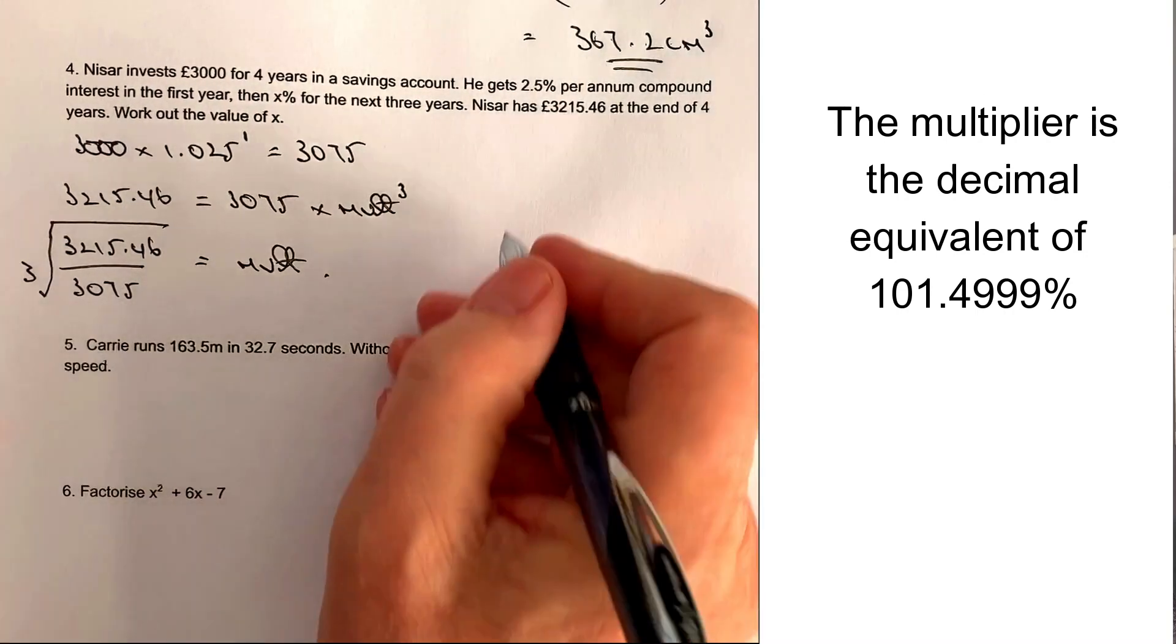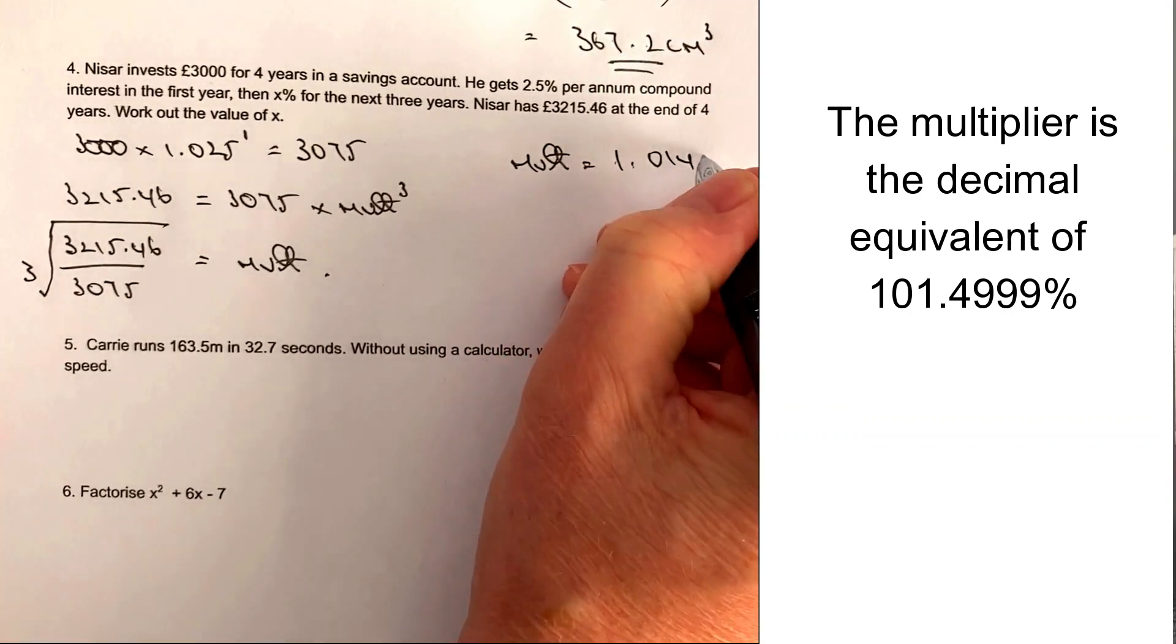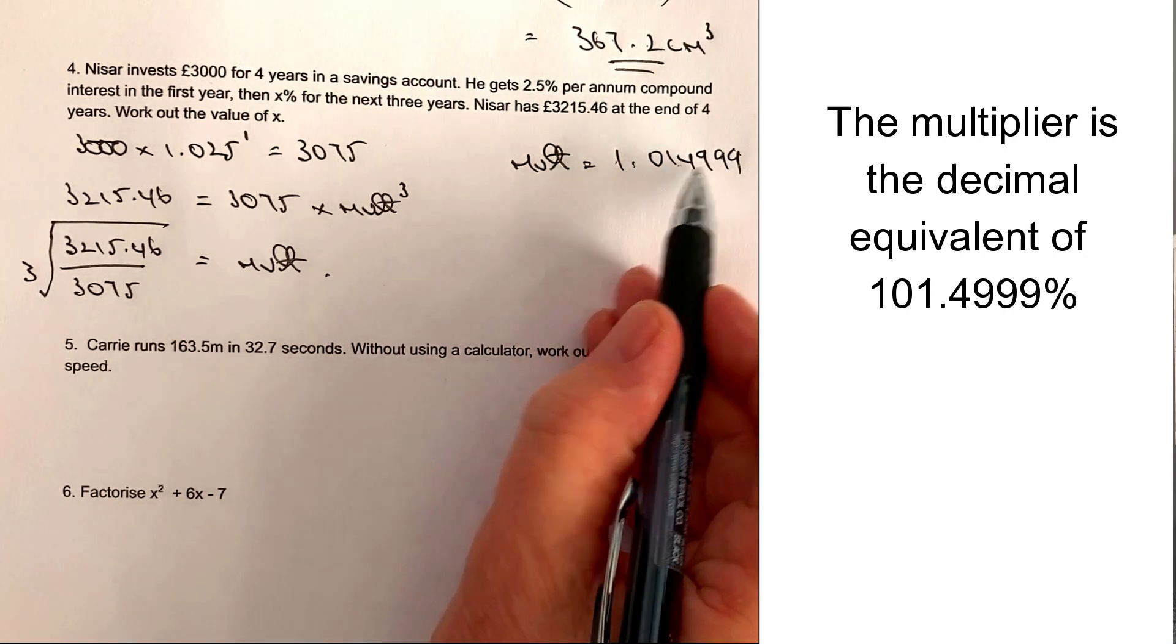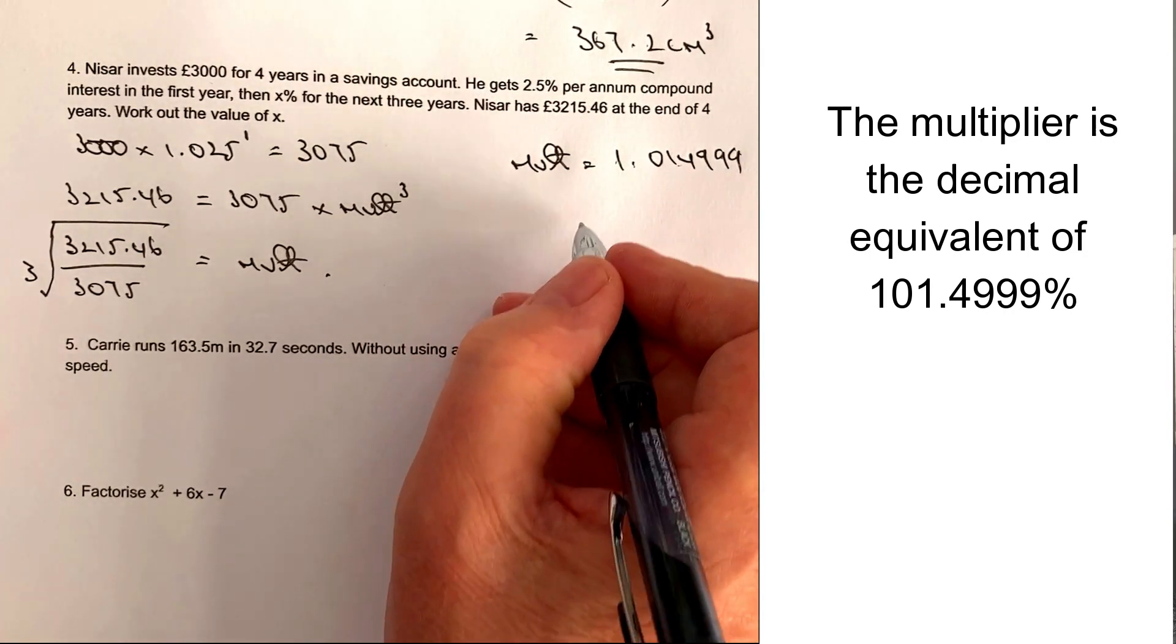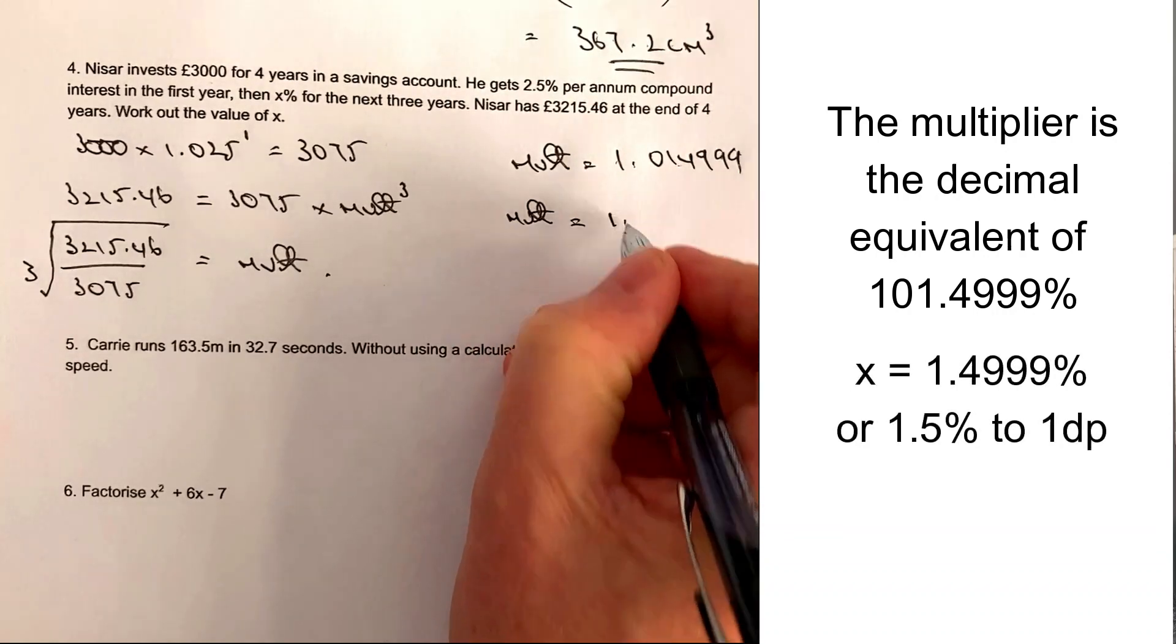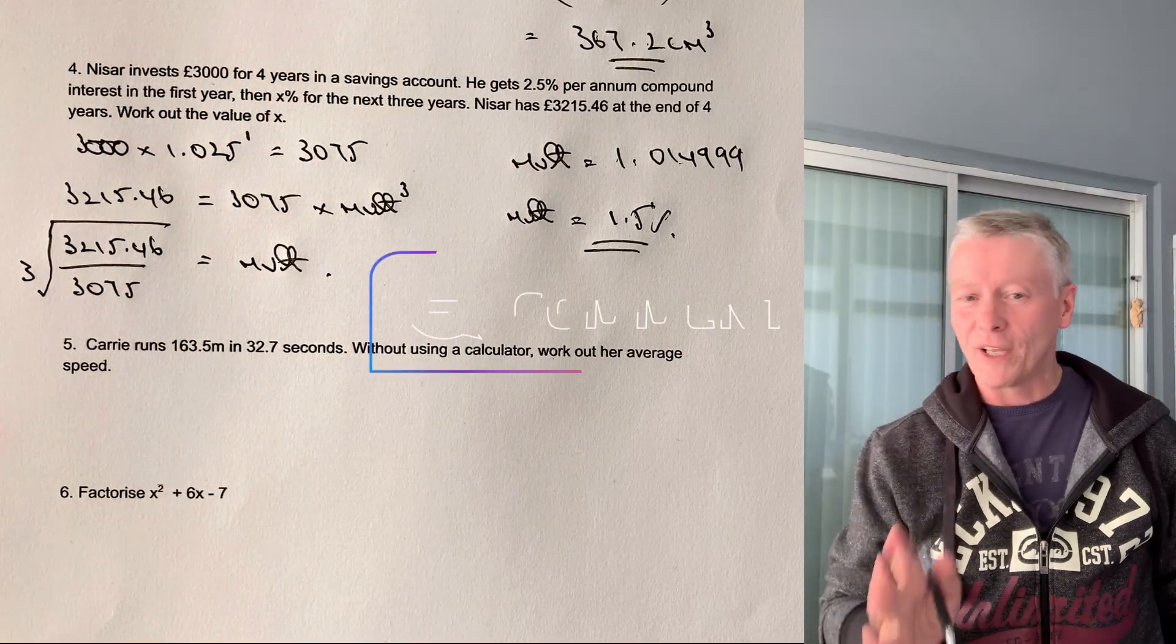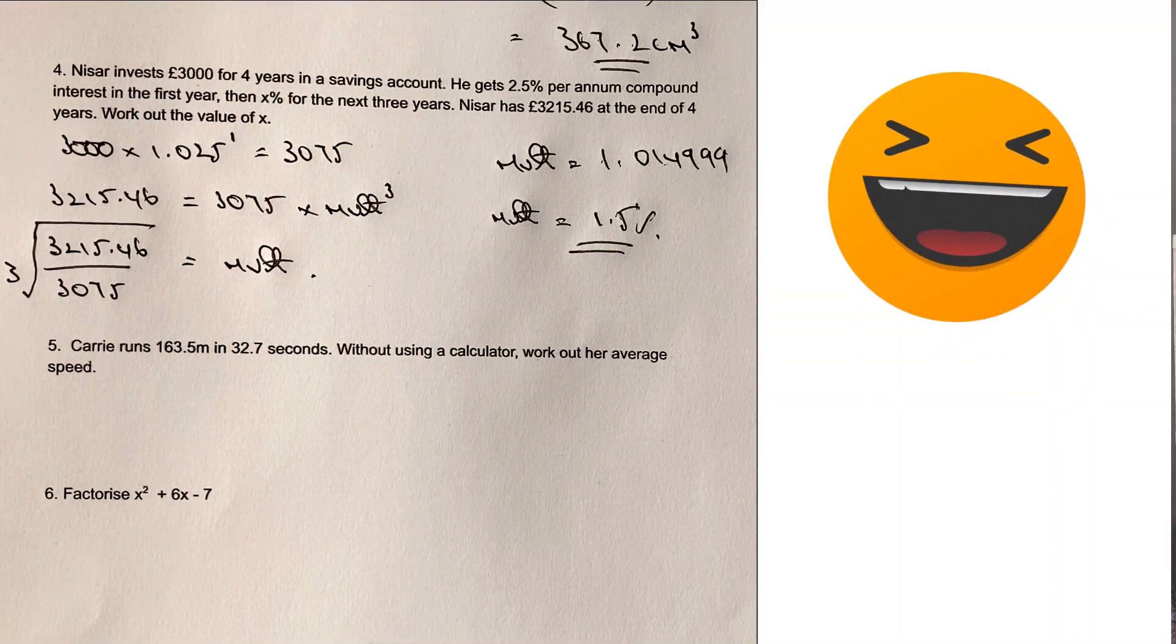So once I get that, I get the multiplier is equal to 1.0149999. So to one decimal place, that's going to be exactly the same. As remember, this is the decimal equivalent of 101.4999%. So therefore, the multiplier or the rate of interest is going to be 1.5% to one decimal place. If you're not sure about that, always add a comment below. I'll always come back to you.